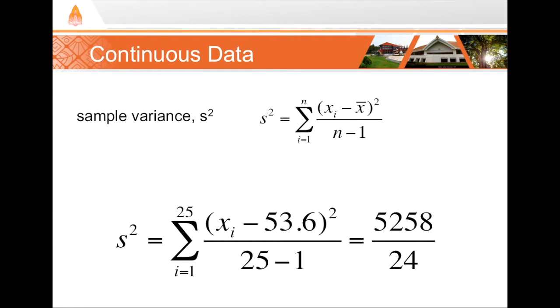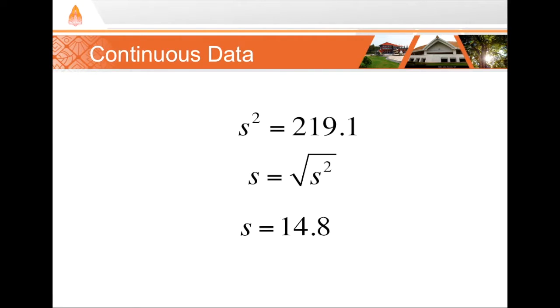Okay, let's look at the results. So, like I explained, you subtract the mean age 53.6 from all ages, square each one, add it up, and divide by 24. If you do that, you should get 5258 divided by 24. That works out to be 219.1. Taking the square root of that, we find that the sample standard deviation is 14.8 years.